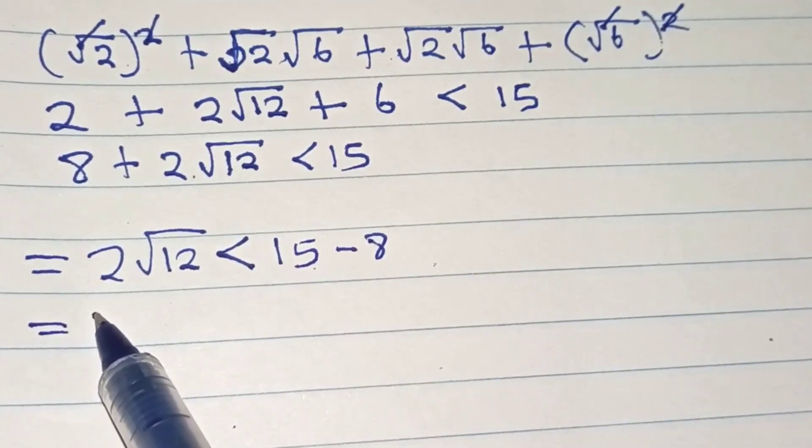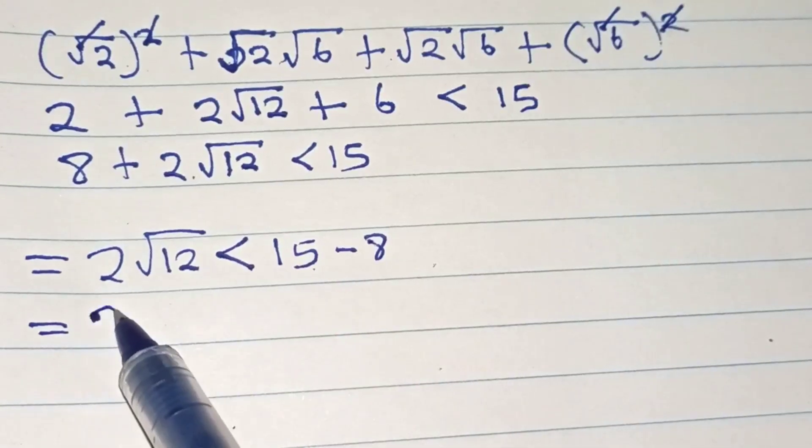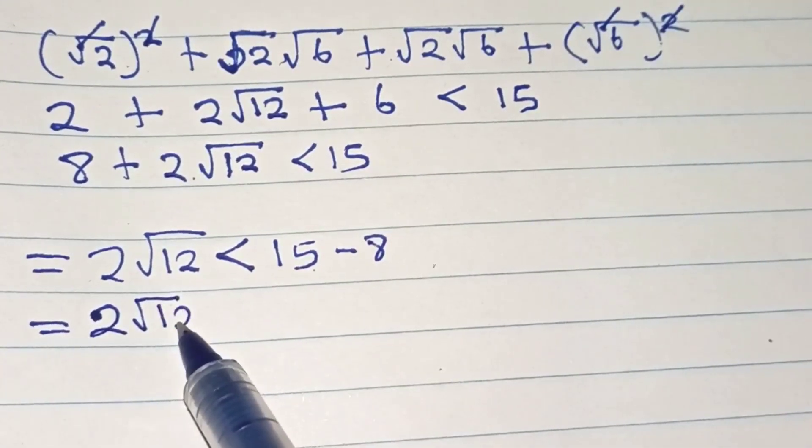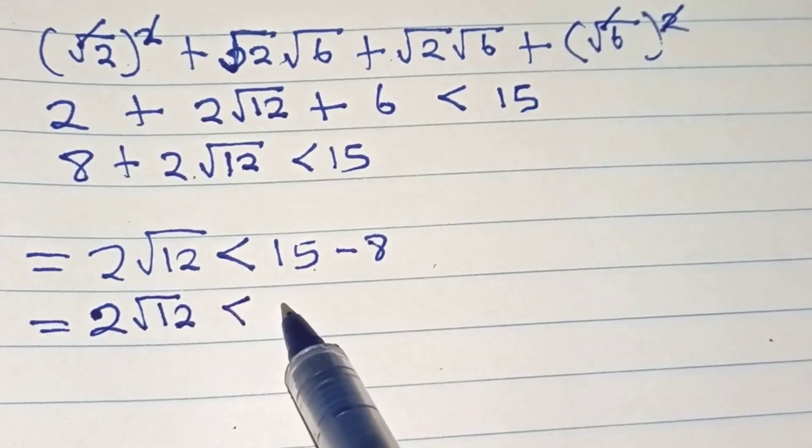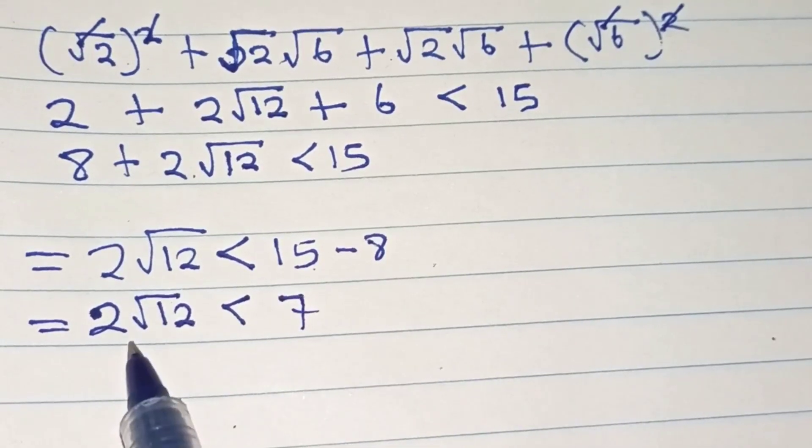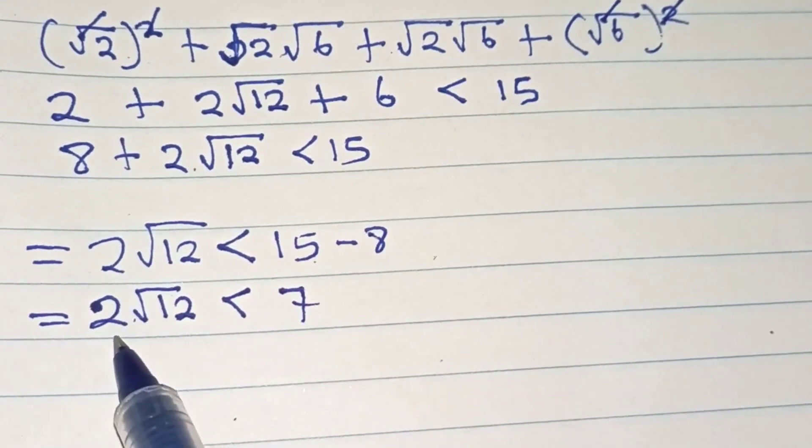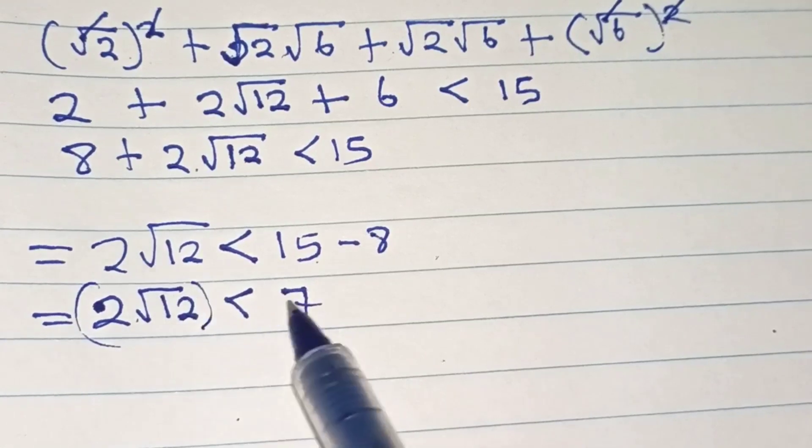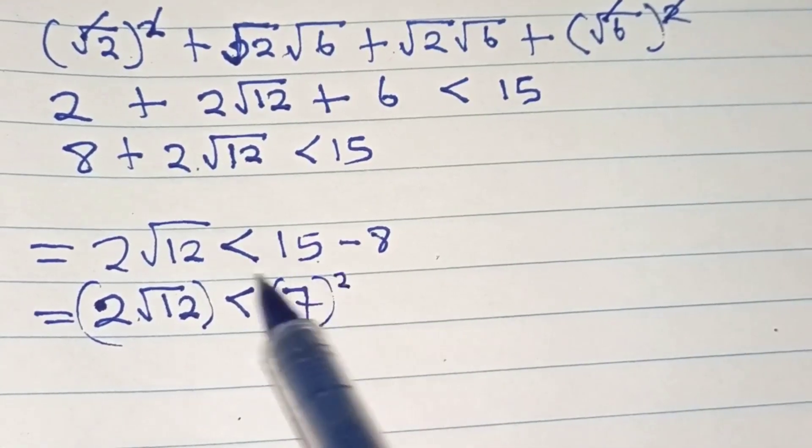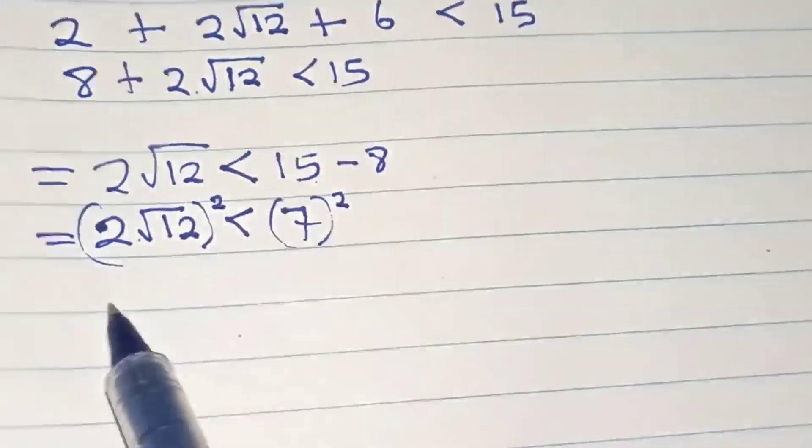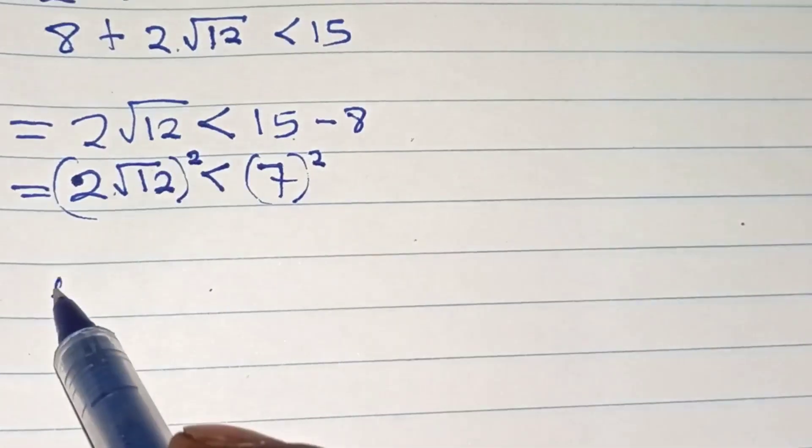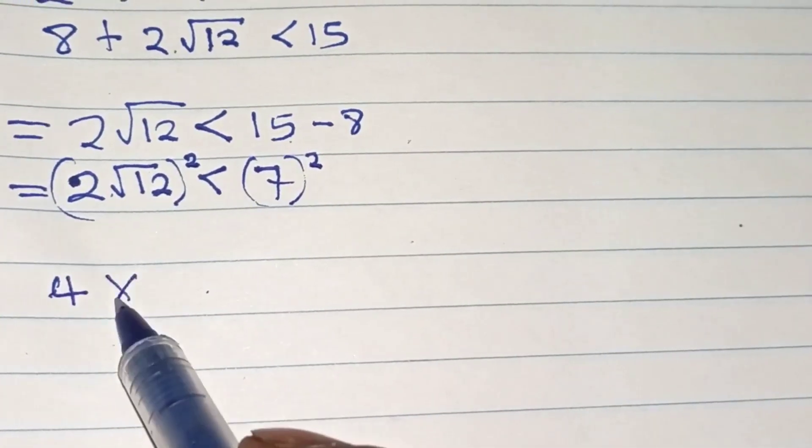This equals 2 square root of 12 less than 7. In this step, we square both sides again. 2 squared times root 12 squared, which is 4 multiplied by 12.